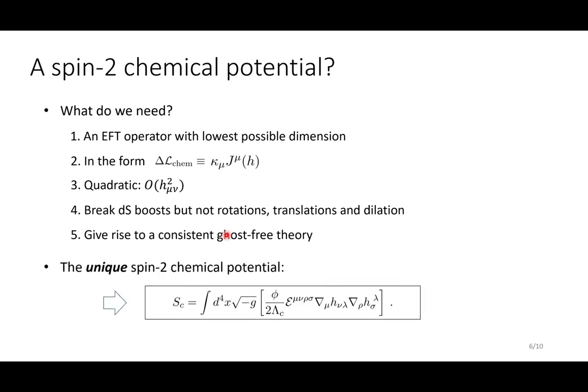Combining these five conditions, we can single out a unique spin-2 chemical potential, which takes this form, where phi is the inflaton field, and H is the spin-2 field, and epsilon is the Levi-Civita tensor. This is the dimension 5 operator.